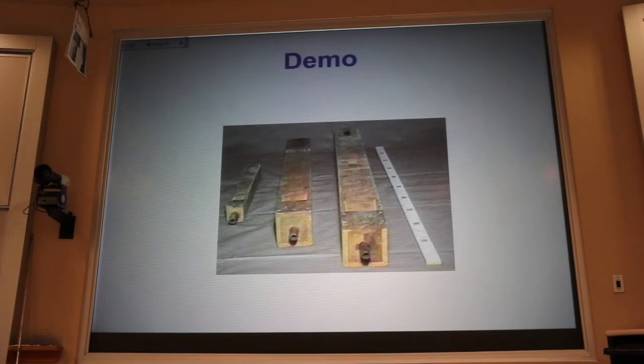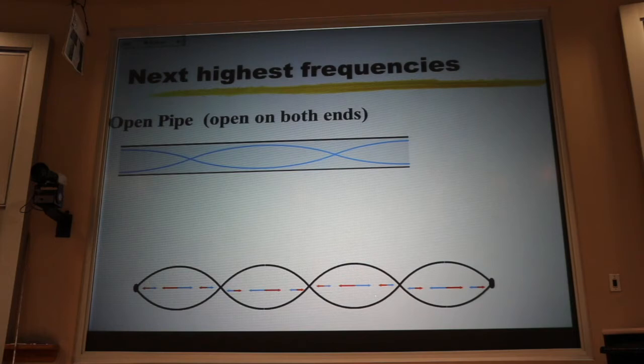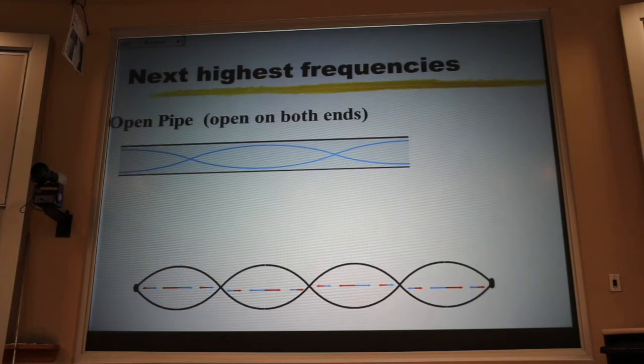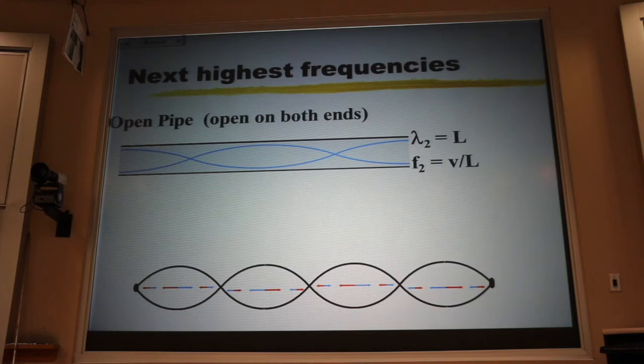Now, let's look at the next highest frequency that will resonate. If the pipe is open at both ends, I have to go to the next frequency by adding a whole football. In this case, I went from one football to two footballs. I doubled the number of footballs. That means my footballs have to be half as big to fit. That means my wavelength just got half as big. That means my frequency just doubled. So now I'm looking at the second harmonic.